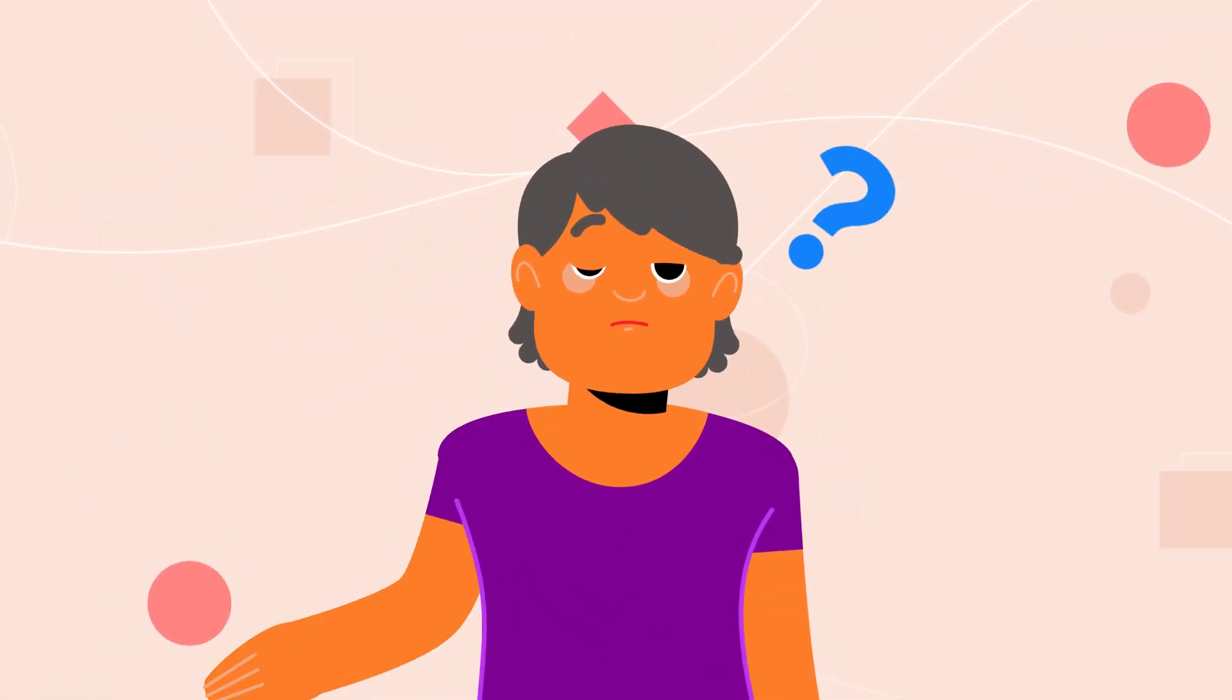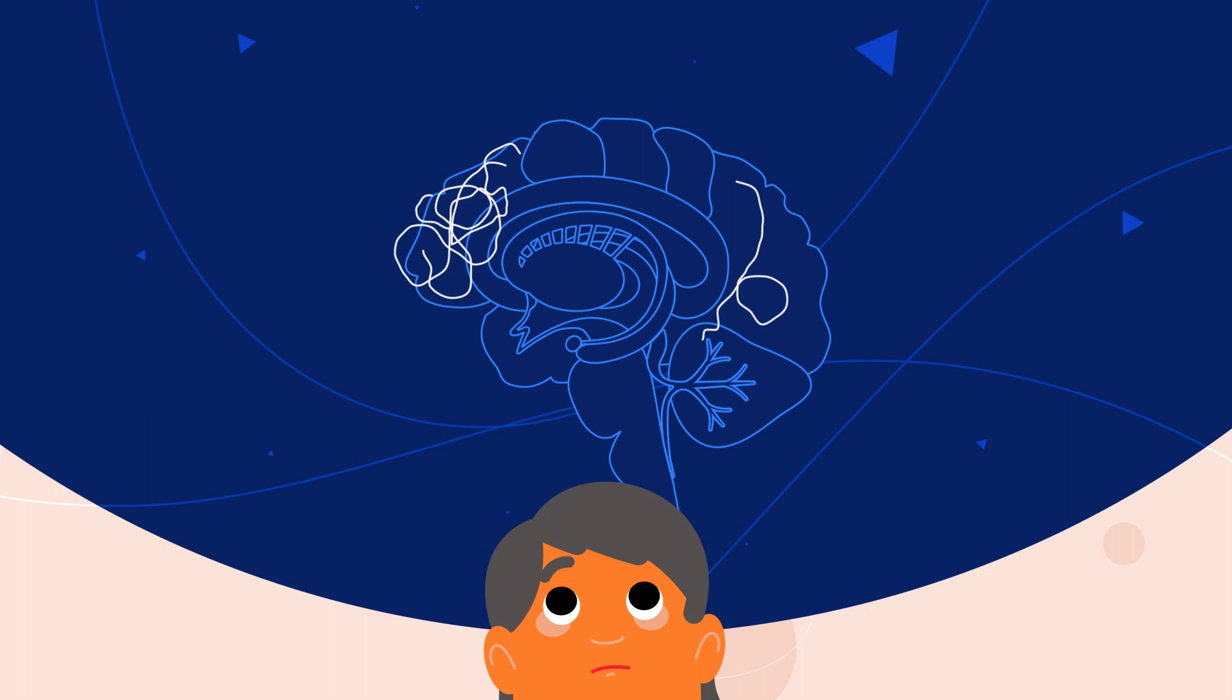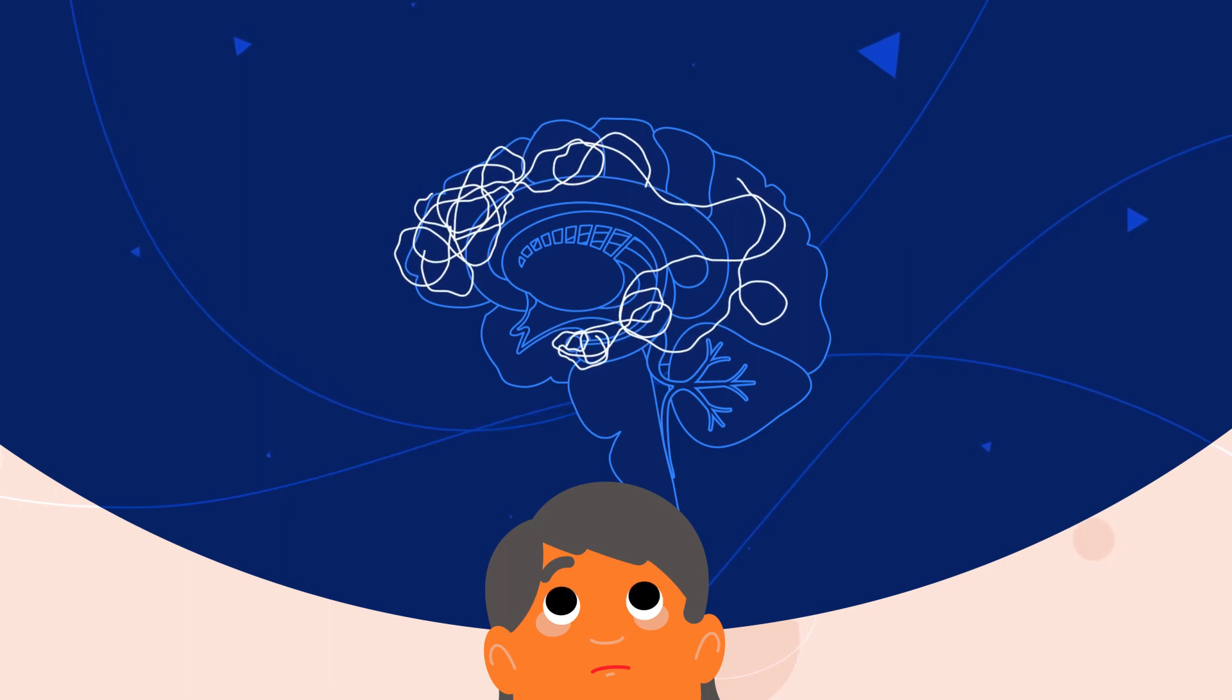Alzheimer's progresses differently in everybody, and over many years, the disease spreads to other parts of the brain.